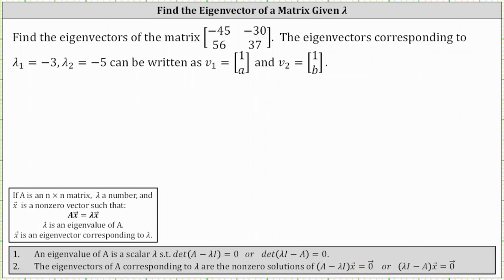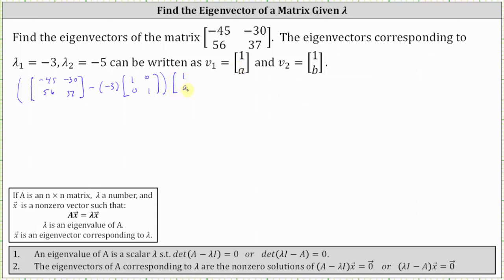Let's begin by determining the eigenvector v sub 1 that corresponds to lambda equals negative 3. We have the difference of matrix A, the given matrix, and lambda which is negative 3 times the 2 by 2 identity matrix, times the eigenvector v sub 1, which is the vector 1a, equals the zero vector. Let's write minus negative 3 times the 2 by 2 identity matrix as plus the matrix 3, 0, 0, 3.